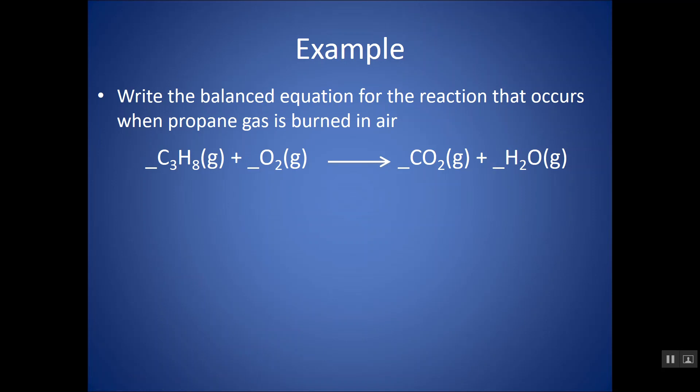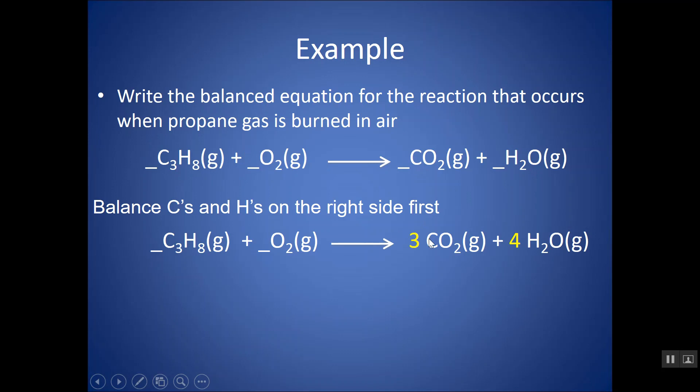So, now all we have to do is balance. And remember that it would be helpful to leave things that are in multiple formulas on the left and right-hand side to the end. So, notice oxygen is here and here and here. Save that to the end. Start with something that's in one thing on the left and one thing on the right, like carbon and hydrogen. So, carbon, there's three here, so I need a three in front of the CO2. Hydrogen, there's eight here, so I need a four in front of the H2O. So, that's my first step.